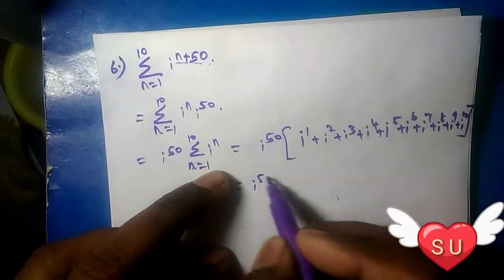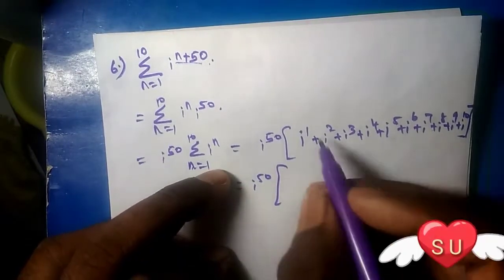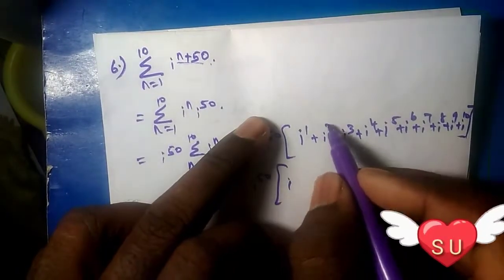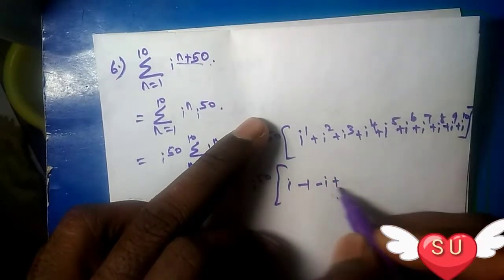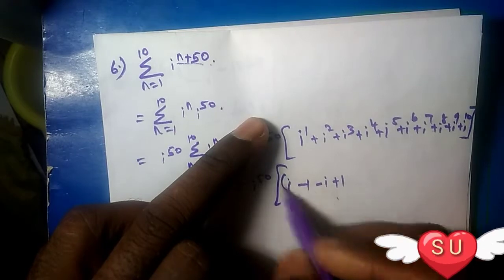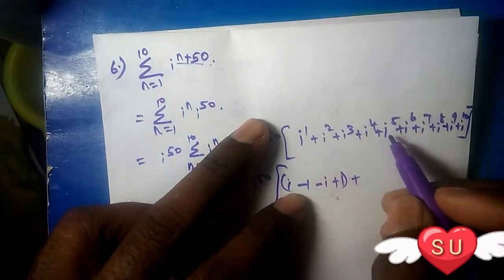Now, we know the pattern of powers of i: i^1 equals i, i^2 equals -1, i^3 equals -i, and i^4 equals 1.